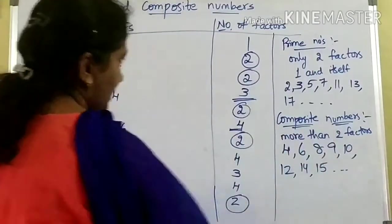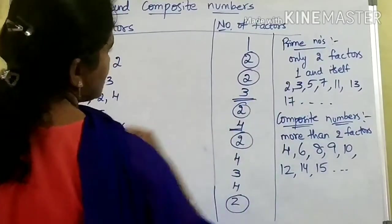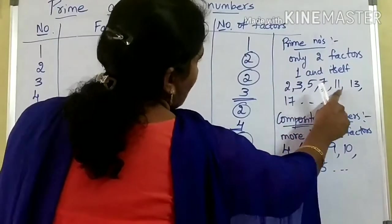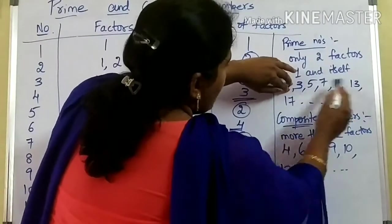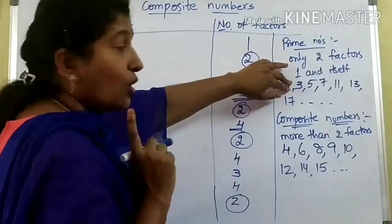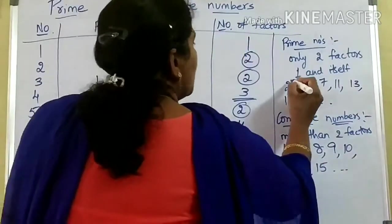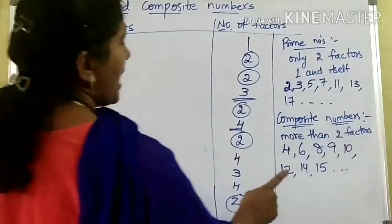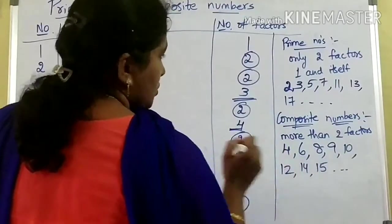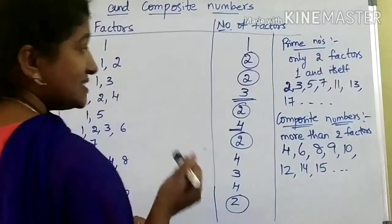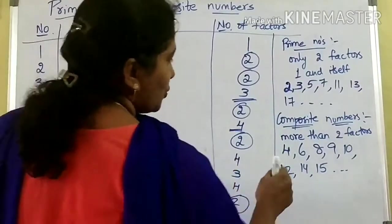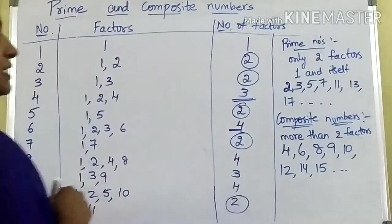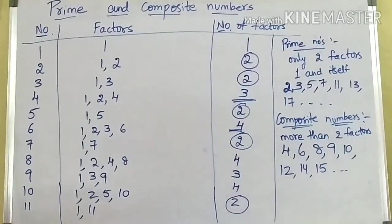The numbers having more than two factors are composite numbers. In prime numbers, which is the smallest prime number? Two is the smallest prime number. If you observe all the prime numbers — 2, 3, 5, 7, 11, 13, 17, 19 — all these numbers are odd numbers except two. Only two is the even prime number. Coming to composite numbers, you will have odd numbers and even numbers both. The smallest composite number is four. The smallest odd composite number is nine.